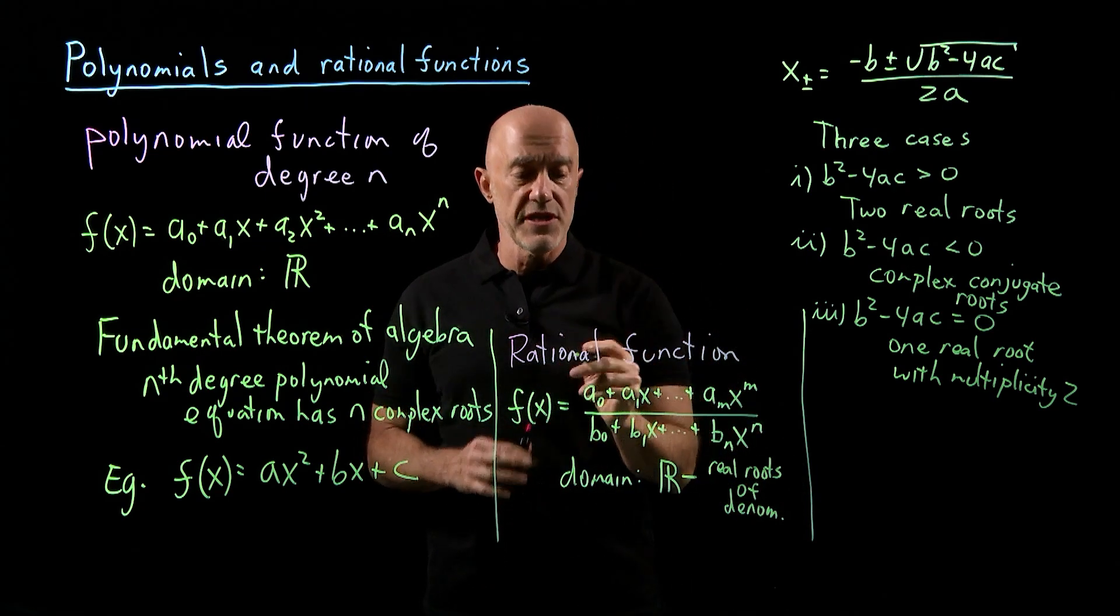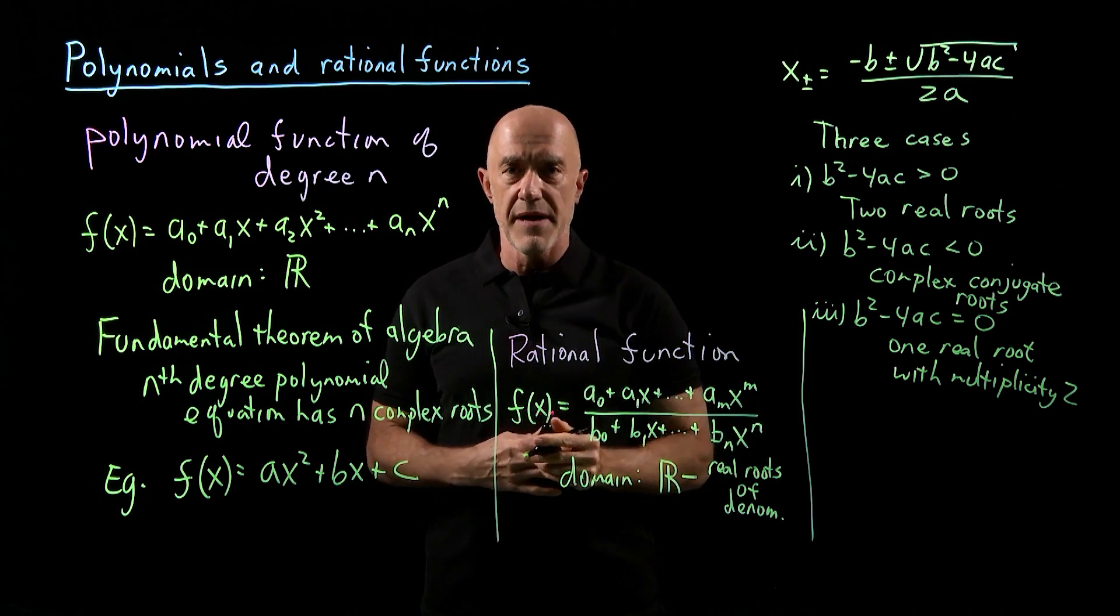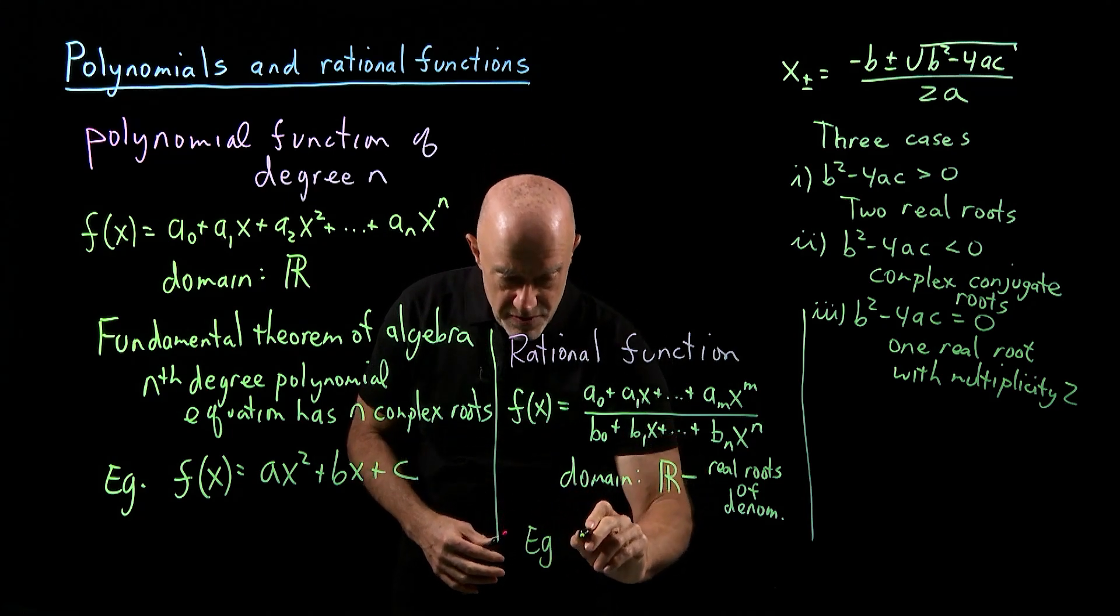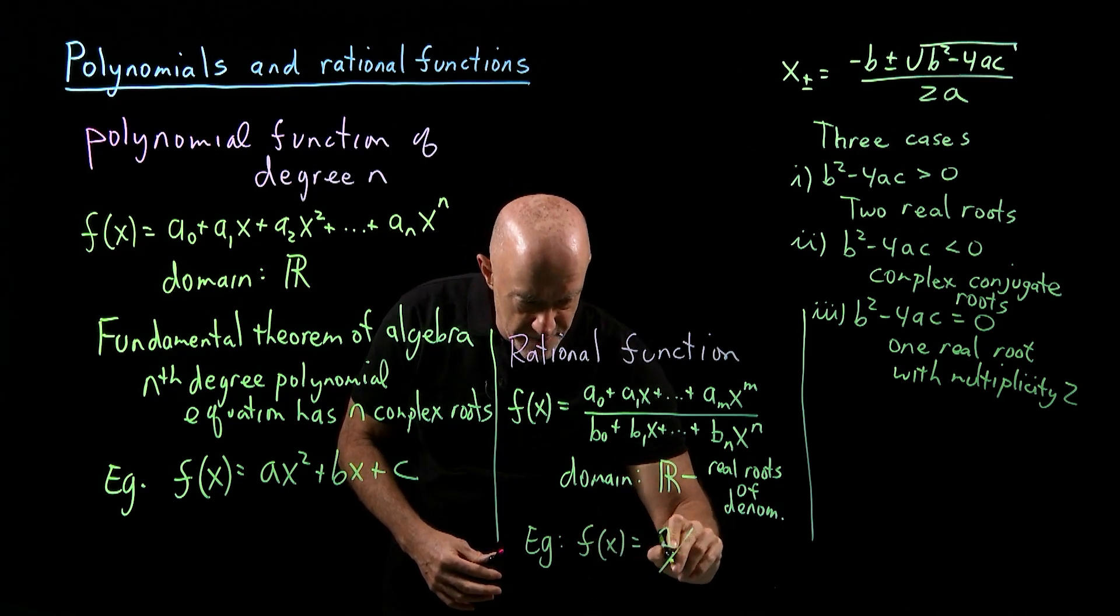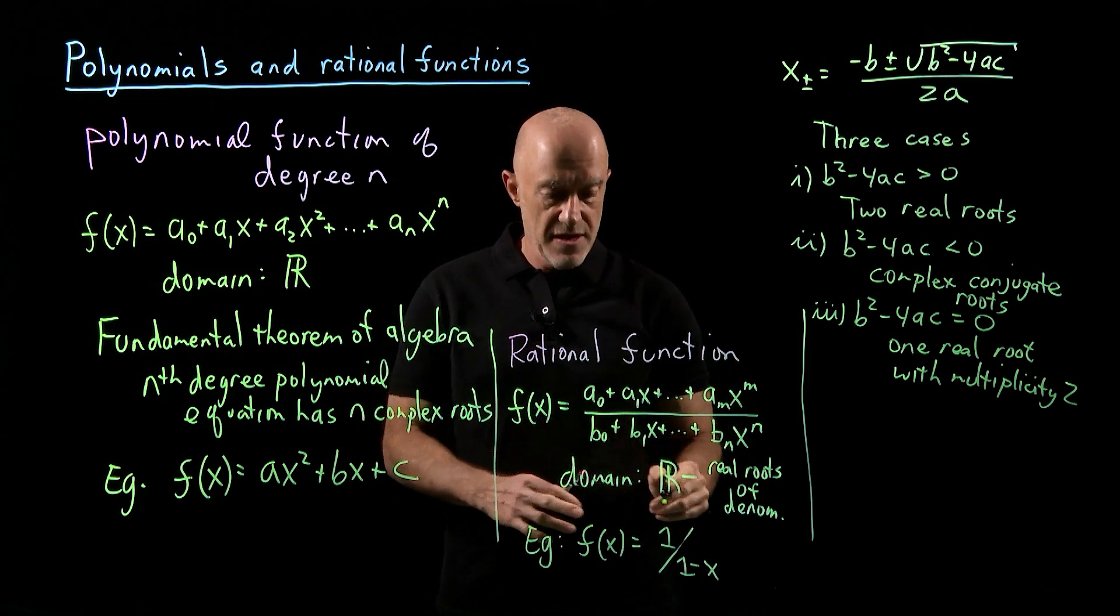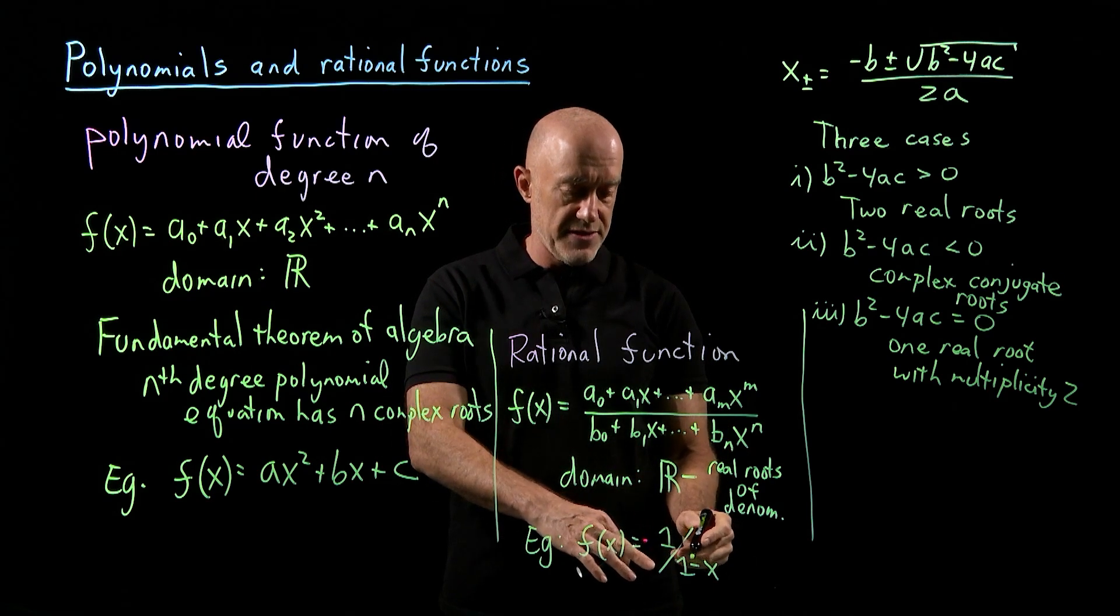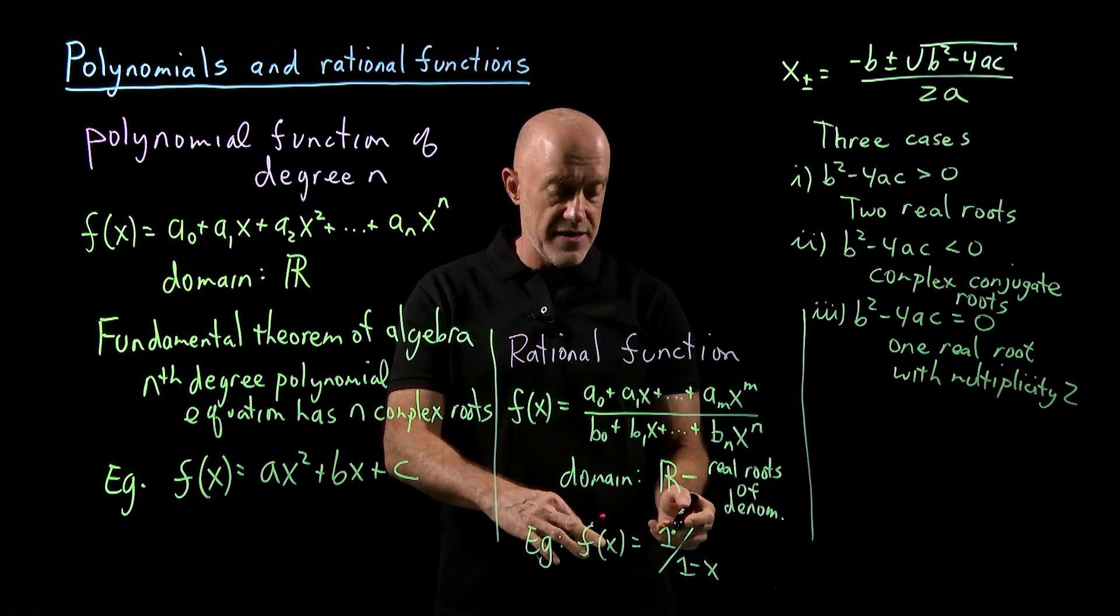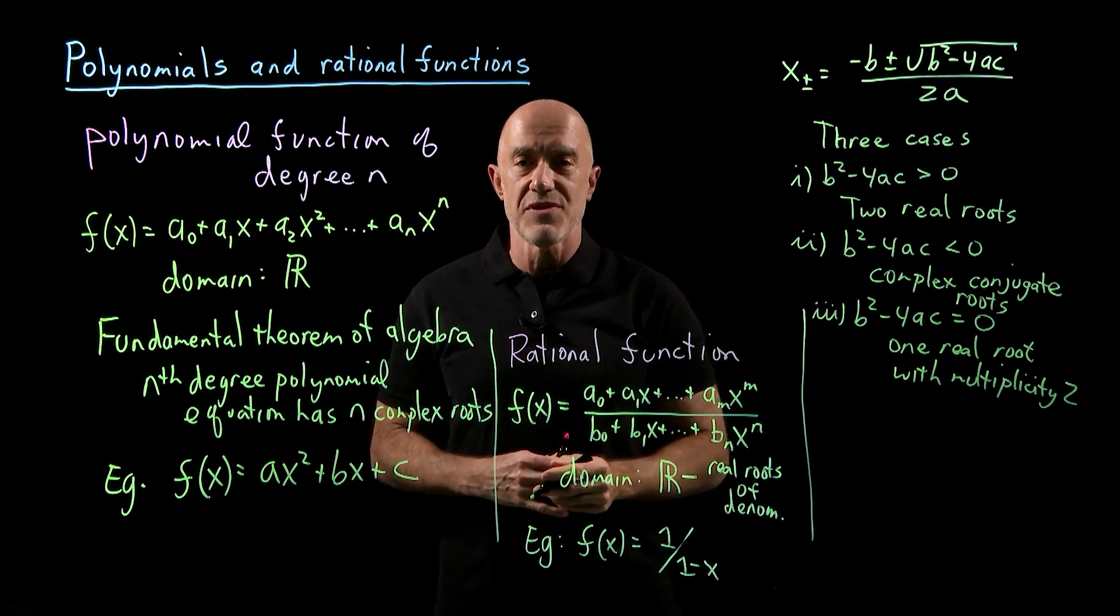So the difficulty of the rational function is that for some values of x we could possibly be dividing by 0. Here's a very simple example. We can take f(x) equals 1 divided by 1 minus x. That's a rational function. The numerator is the constant polynomial. The denominator is the linear polynomial 1 minus x. The domain of this function is all the real numbers except for x equals 1, where the denominator is 0.